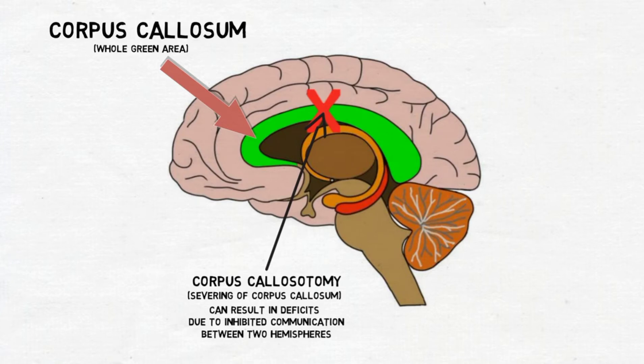This is thought to occur because information from the left visual field travels to the right side of the brain, while language centers reside primarily on the left side of the brain. Without the corpus callosum to connect the two hemispheres, the patient cannot place a name to an otherwise very familiar object.